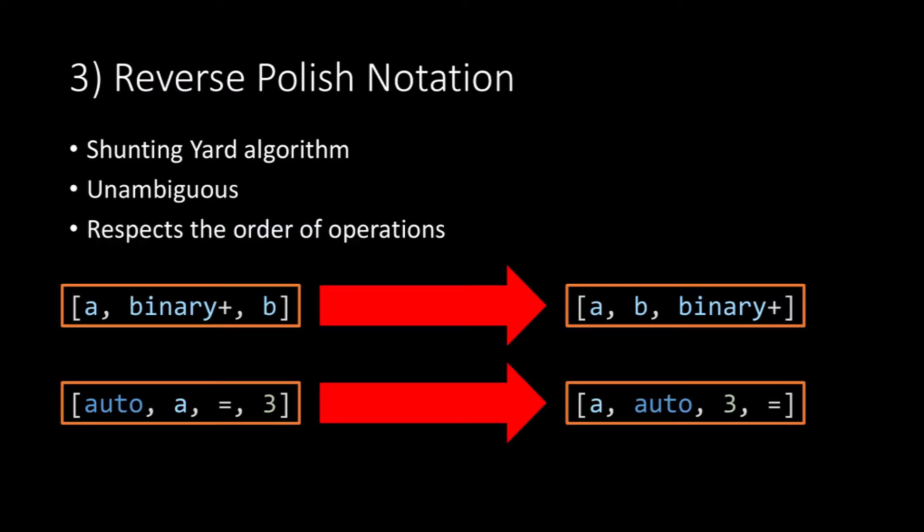Now for reverse Polish notation. The best way to do this is through using the shunting yard algorithm, and this gives us a form which is unambiguous and respects the order of operations. If you have something like a plus b, that would be binary plus, then you would rewrite that as a b binary plus. You can also do the same with auto a equals 3, as that would turn into a auto 3 equals.